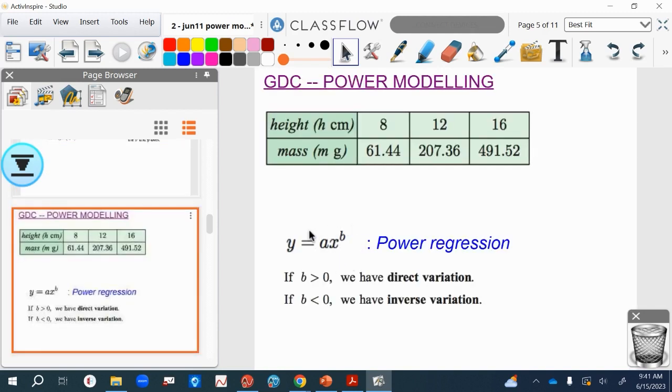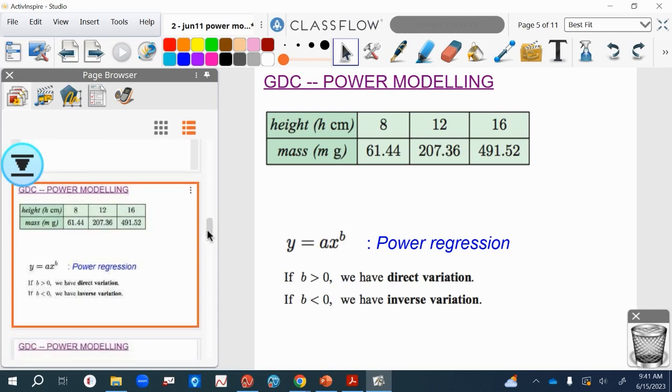So when a model is in this form, you can quickly recognize by the value of b. If it's positive, it will be direct variation. If it's negative, it's inverse variation, which is useful.